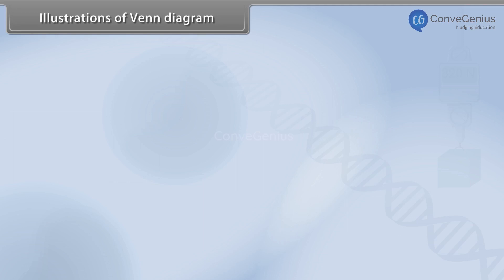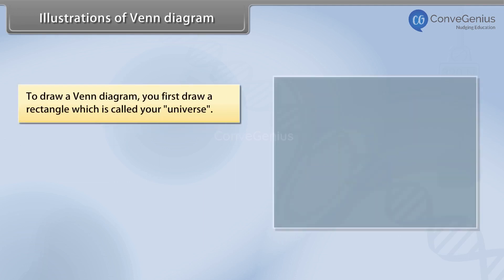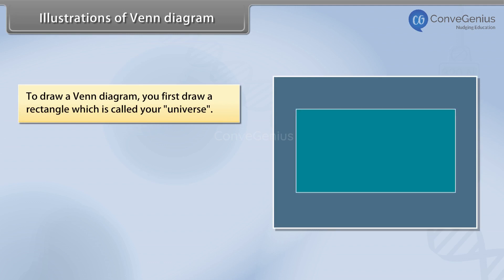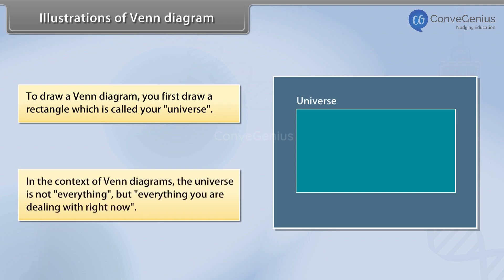Illustrations of Venn Diagram. To draw a Venn diagram, you first draw a rectangle which is called your universe. In the context of Venn diagrams, the universe is not everything, but everything you are dealing with right now.